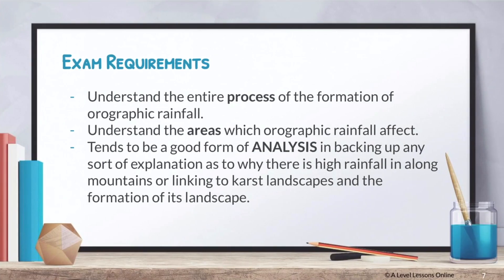For exam requirements, similarly to convectional rainfall, you simply need to understand the process and formation of orographic rainfall. Understand the areas involved - we're looking at mountains, topographic barriers, and topographic hills. It also tends to be a good form of analysis especially when you link it to karst landscape, including things like limestone pavement and cone karst, which can also act as topographic barriers causing orographic rainfall to form.